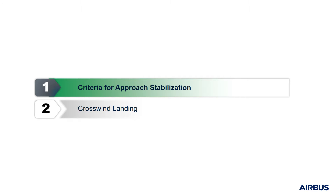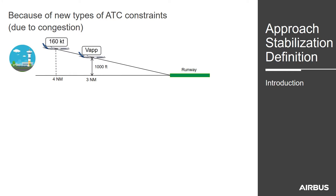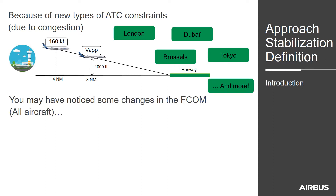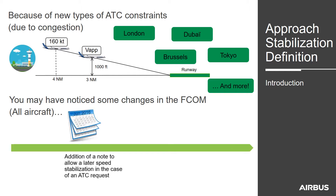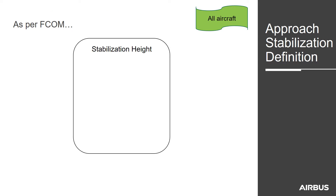First, approach stabilisation. Due to ATC constraints, a speed of 160 knots is required up to 4 miles to the threshold. This is applicable in London, Dubai, and many major airports. Therefore, you may have seen changes in our flight crew operating manual. In June 2016, we added a note that later speed stabilisation is acceptable in case of ATC request. And in December 2017, we opened this later stabilisation for non-constrained approaches. As per FCOM, the stabilisation criteria height is 500 feet in VMC and 1000 feet in IMC.